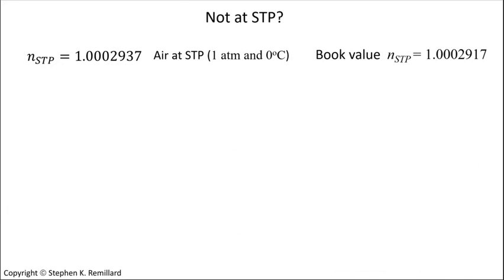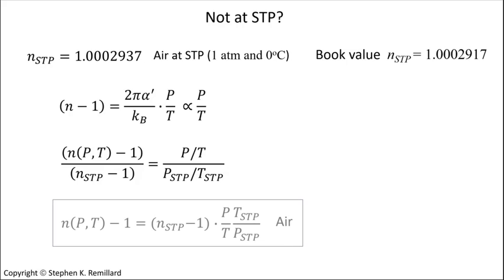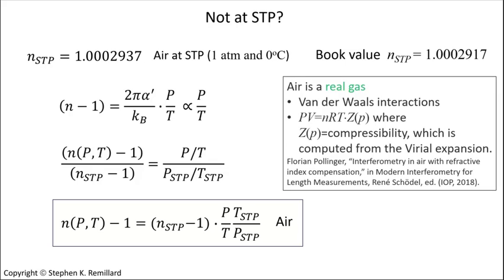To correct for temperature and pressure, back to the ideal gas law. In our working equation, it's clear that refractivity is proportional to pressure over temperature. So take the ratio of refractivity at the p and T of interest to that at STP. Rearrange this to get an expression that scales the refractivity known at STP, or known anywhere actually, to the refractivity anywhere else. Of course air is a real gas with van der Waals interactions between molecules, so the compressibility computed using the virial expansion can be included as a higher order correction, and sometimes is.